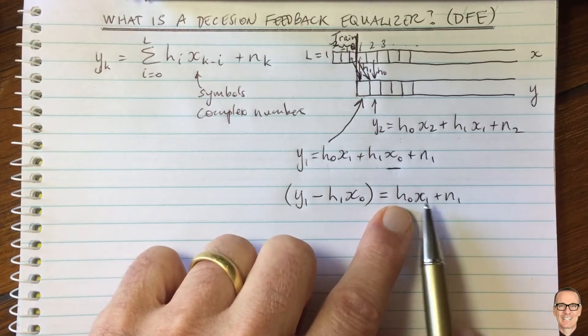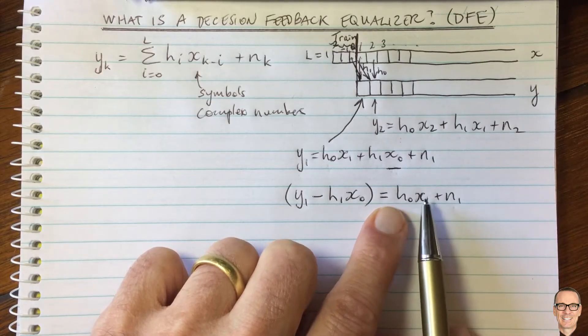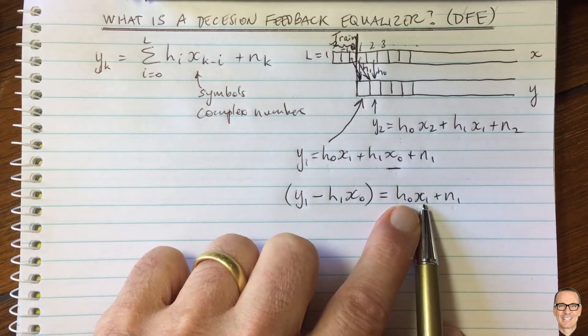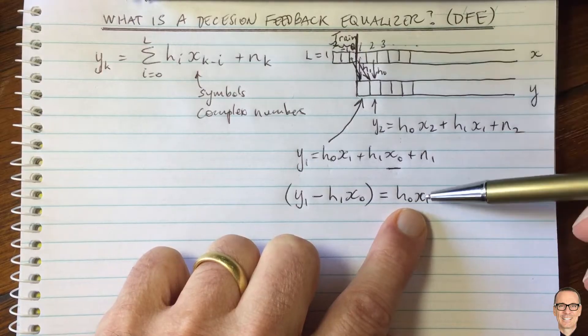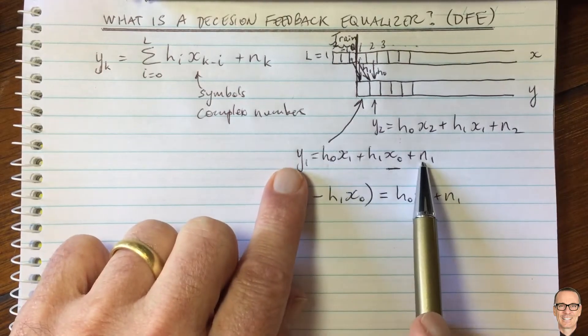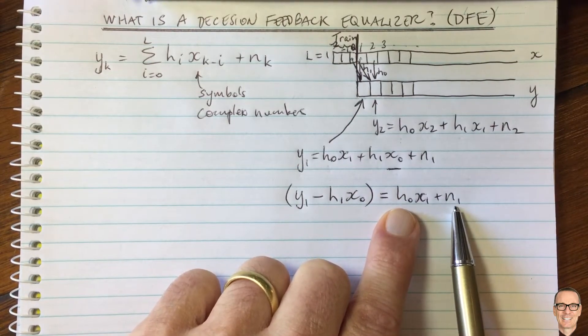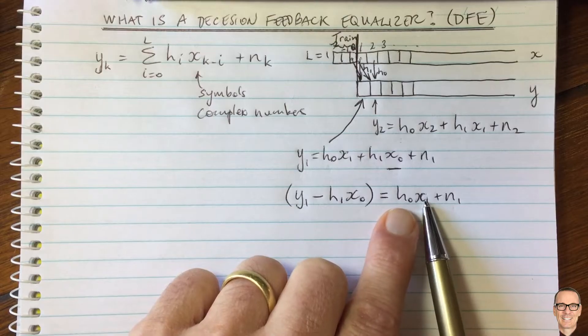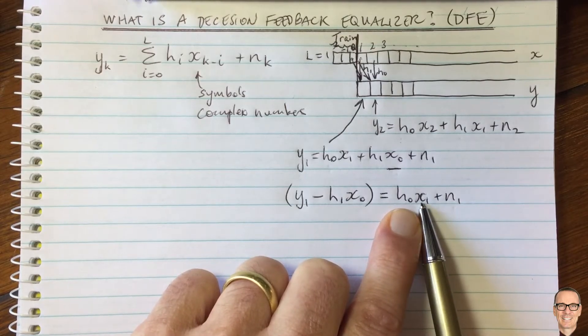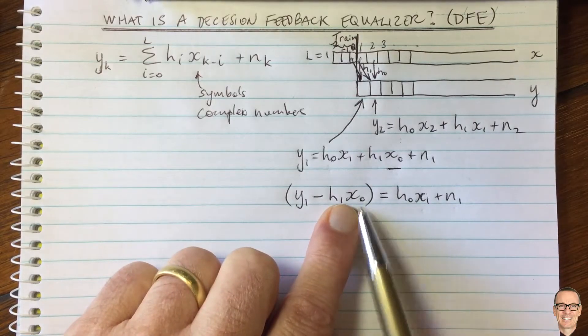So we've turned our inter-symbol interference channel into a channel now where we know everything on the left-hand side. And the only things on the right-hand side that we don't know are the noise, of course, which is always the case as Gaussian noise, and x1, which is the data symbol that was being sent to us, which is what we've got to try to estimate. So we've turned our inter-symbol interference channel into a frequency flat channel, where there's only one component from the data. There's nothing smoothed over from previous time slots, because we've removed that, we've extracted it.